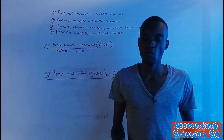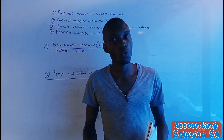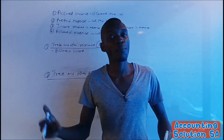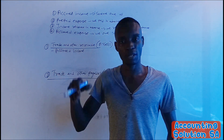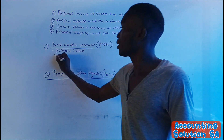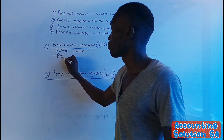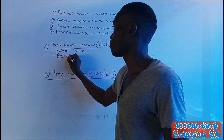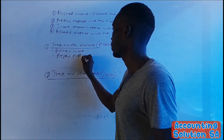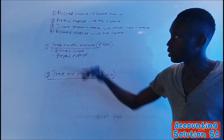Prepaid expense — expense paid in advance — is like paying rent for next year. We have a claim, meaning the landlord can give us our money back because we've already paid for next year. We control that money, so it's an asset. Prepaid expense is classified as an asset under trade and other receivables.